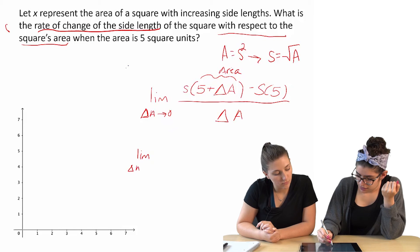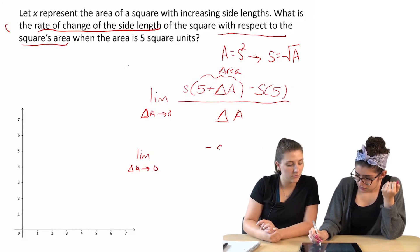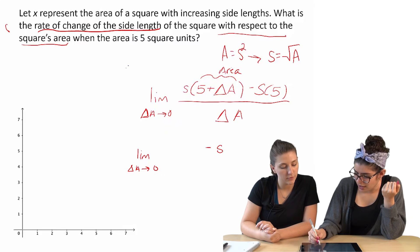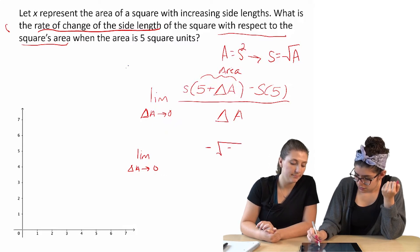So we're looking at the limit as delta a... Well, we know s of 5 is just going to be root 5, right? Right. So root 5.